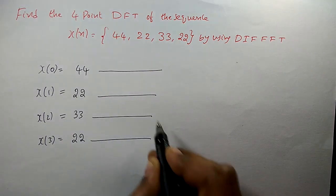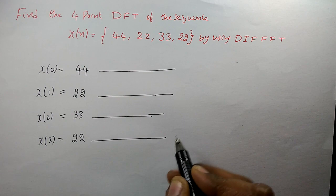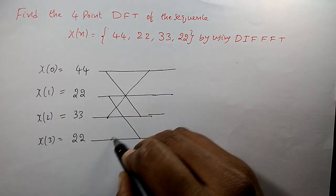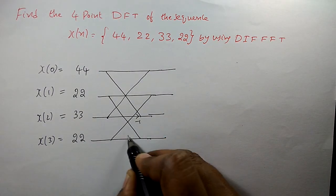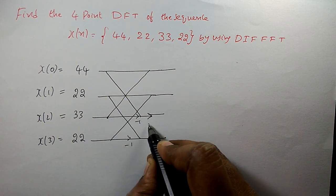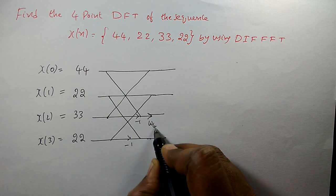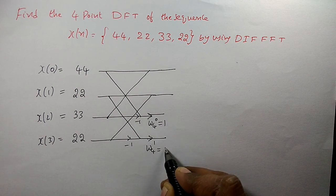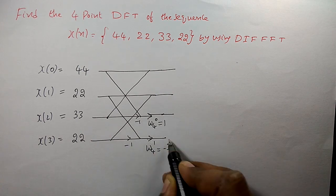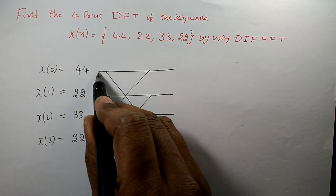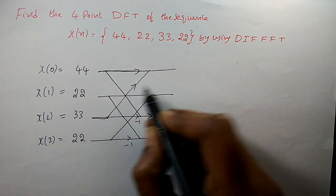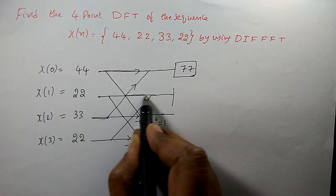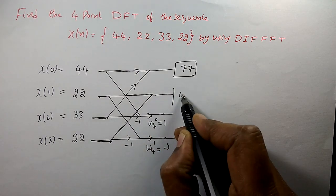This is the first stage butterfly diagram for decimation in frequency FFT. The twiddle factors are Omega_4^0 and Omega_4^1, where Omega_4^0 = 1 and Omega_4^1 = -j. For the upper branches: the signal 44 and 33 give 44 + 33 = 77. The signals 22 and 22 give 22 + 22 = 44.